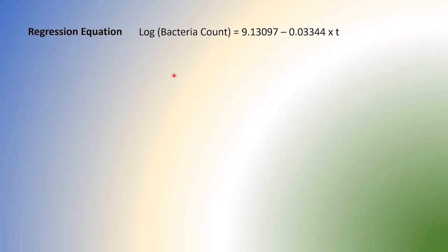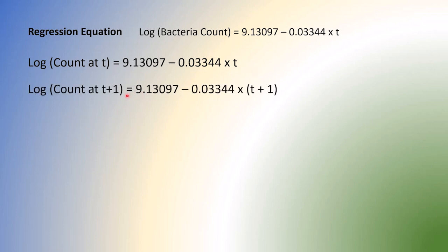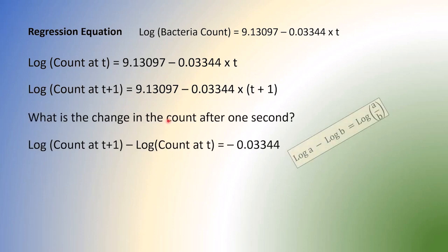So this is our original regression equation. And now suppose at t, that's the equation. What's the bacteria count at second t? Is that one. The t could be 1, 2, 3, 4, 5, etc. What happens at t plus 1? At t plus 1, we have this bacteria count. When we take the difference between these two, we get that number. So after one second, the log difference will be this much.